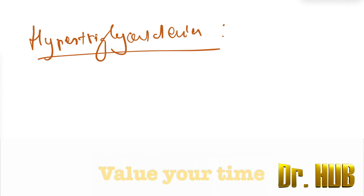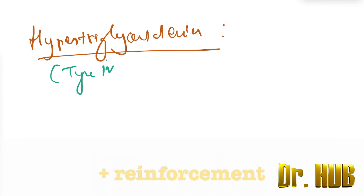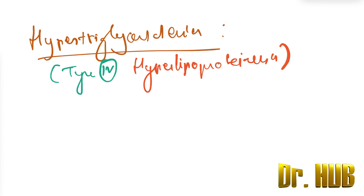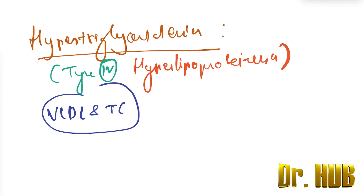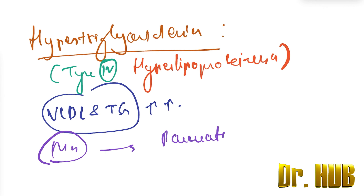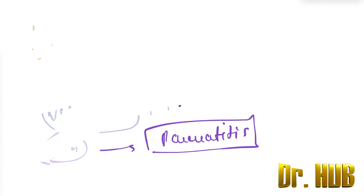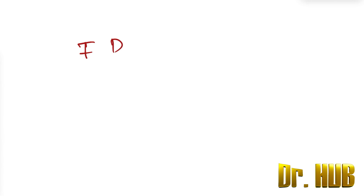Next we move to hypertriglyceridemia, which is Type 4 hyperlipoproteinemia. In Type 4, the increased levels are VLDL and triglycerides. The manifestation of hypertriglyceridemia is pancreatitis.